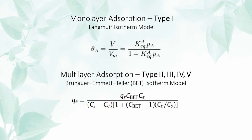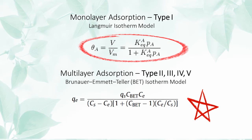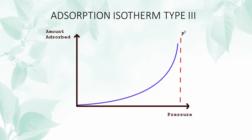Monolayer adsorption such as type 1 isotherms can be described using the Langmuir model. Adsorption isotherms type 2, 3, 4, and 5, however, involve multilayer adsorption, and the BET isotherm model is usually preferred. Let us look at type 3 adsorption isotherms.